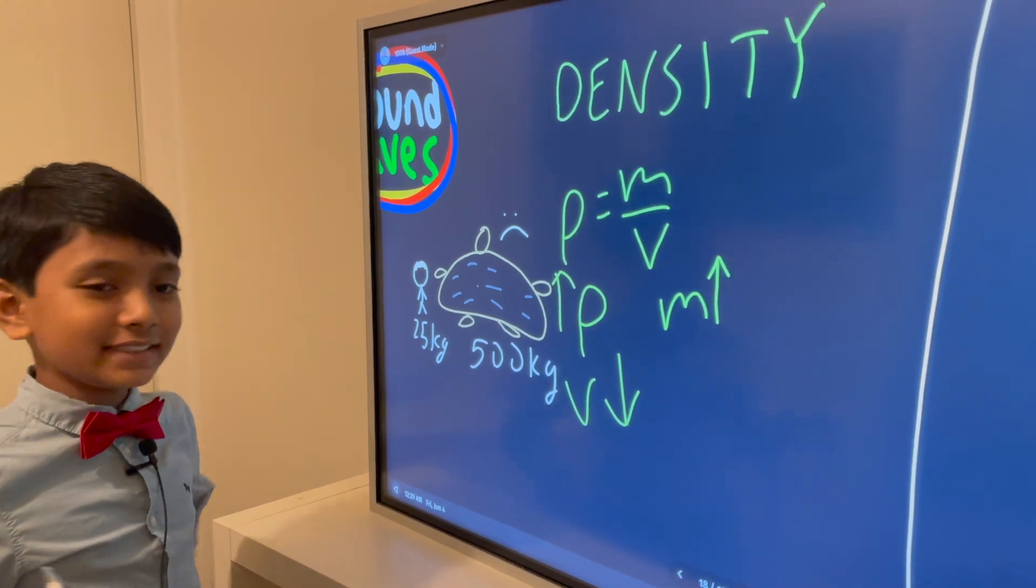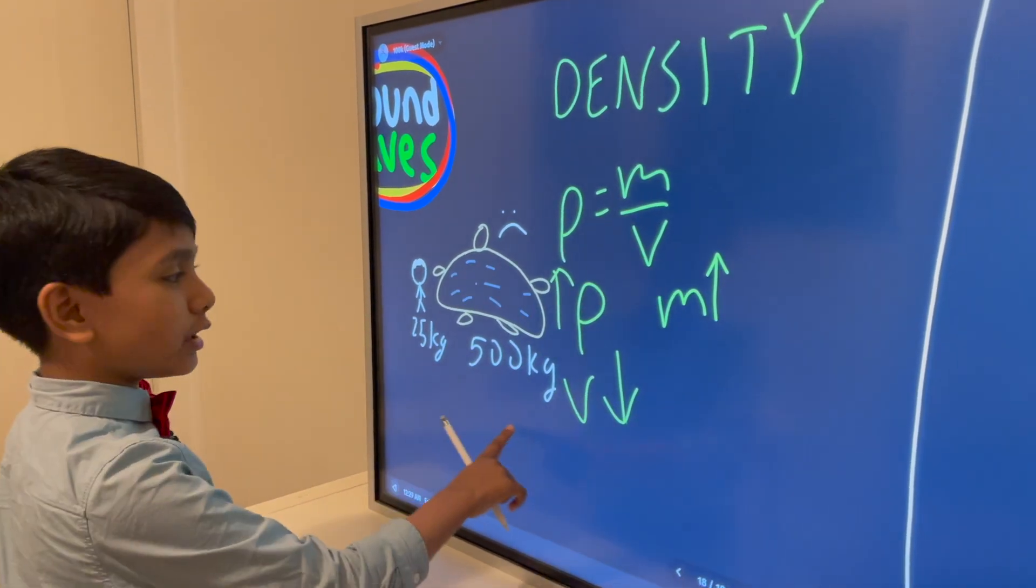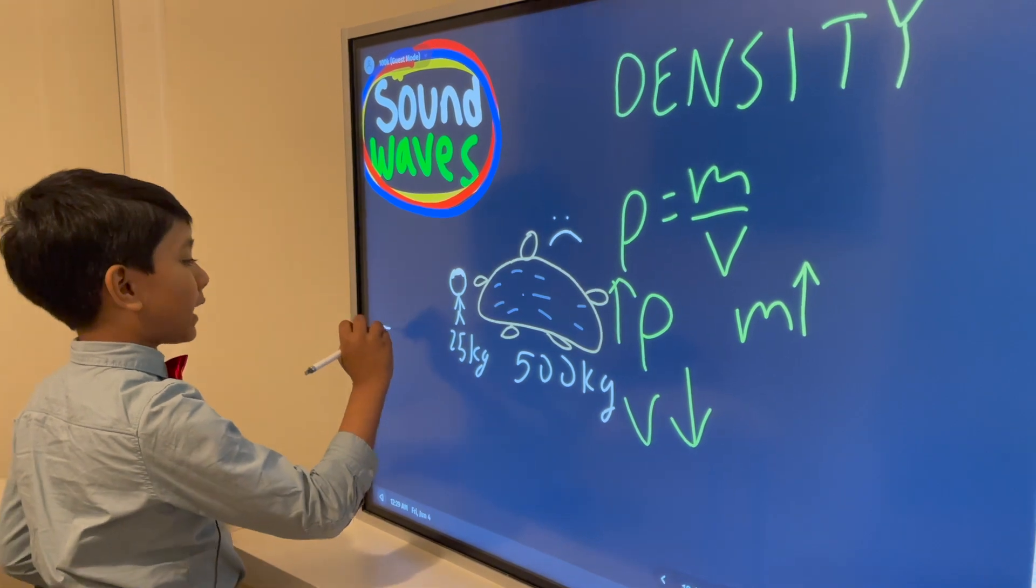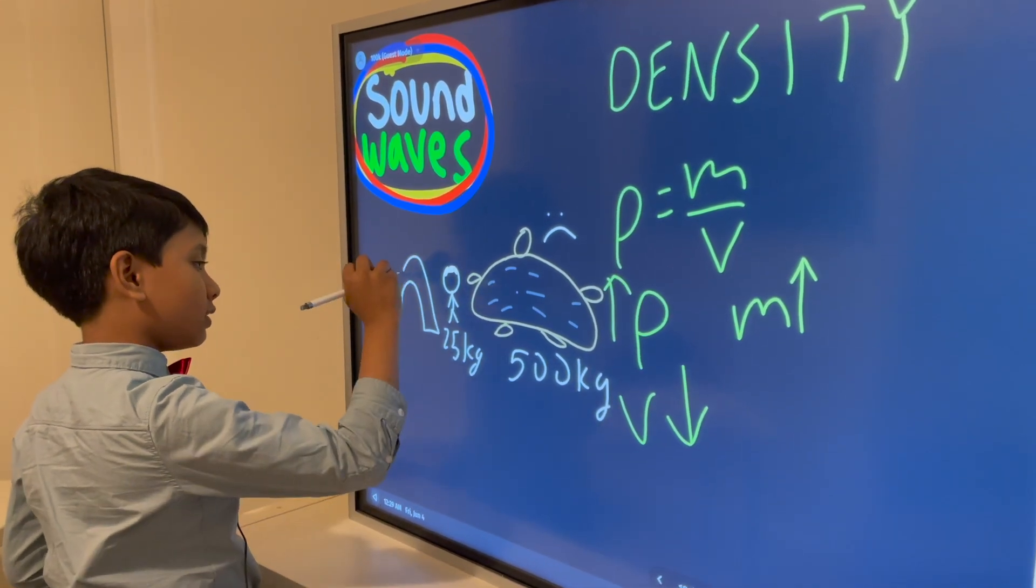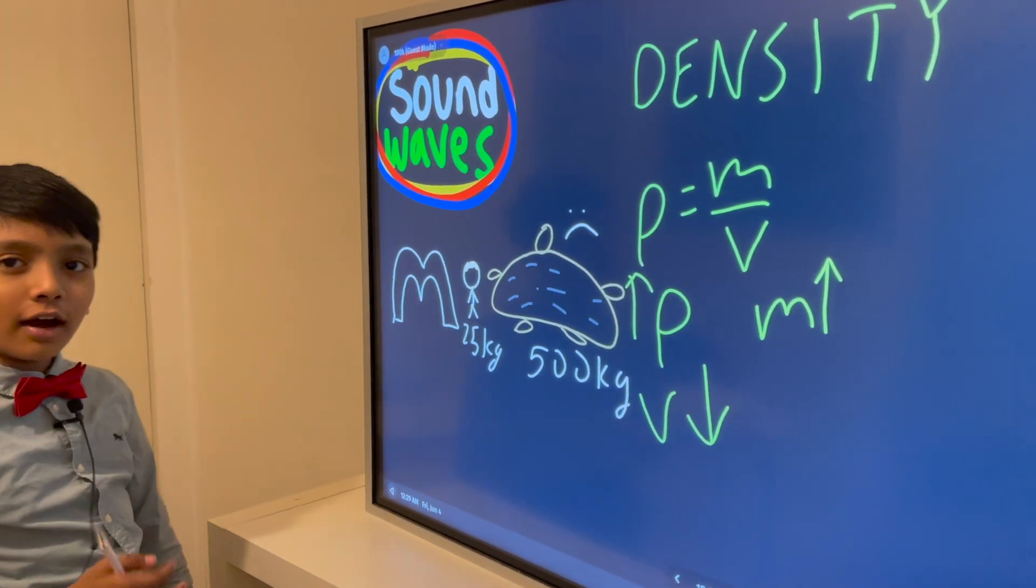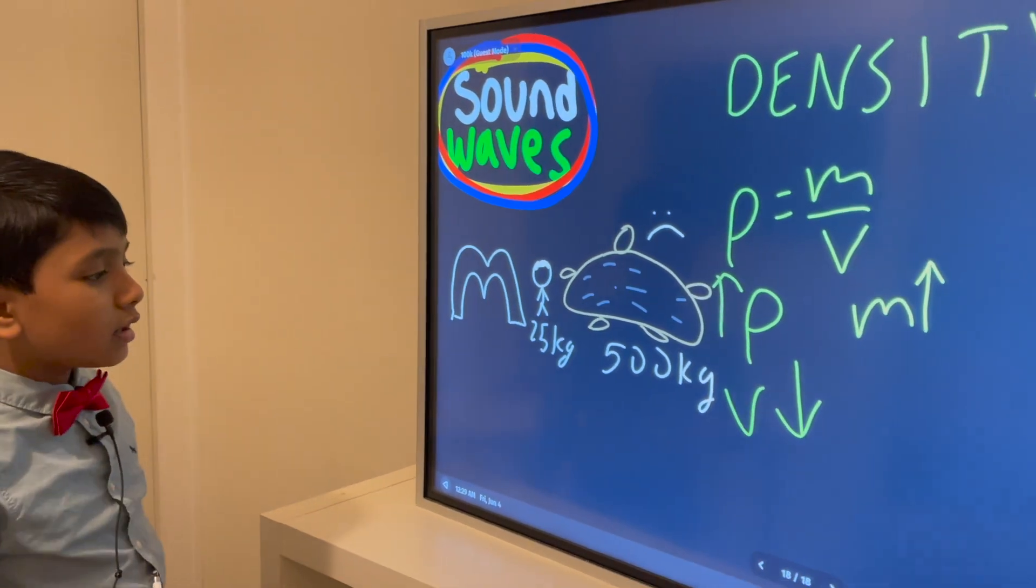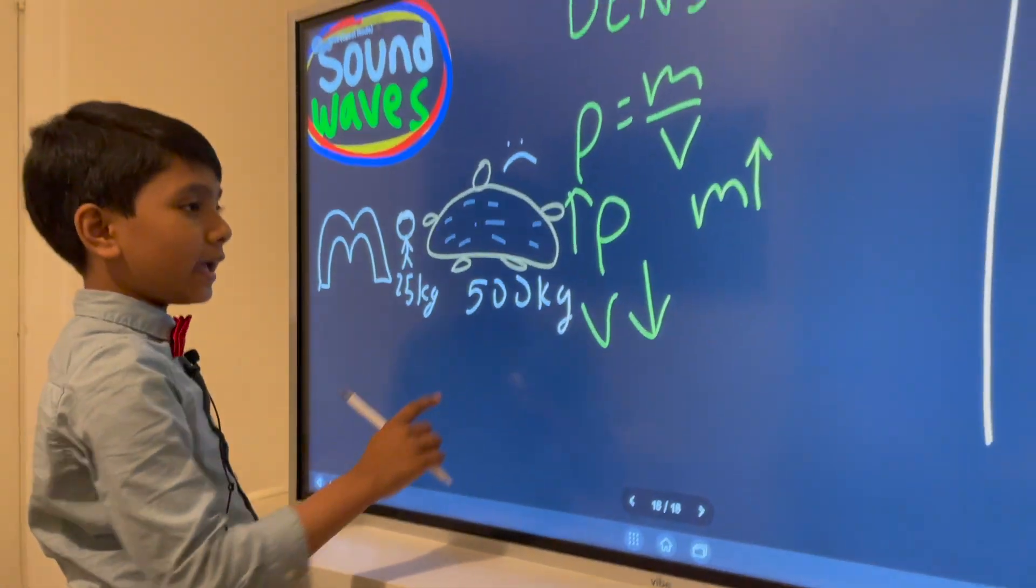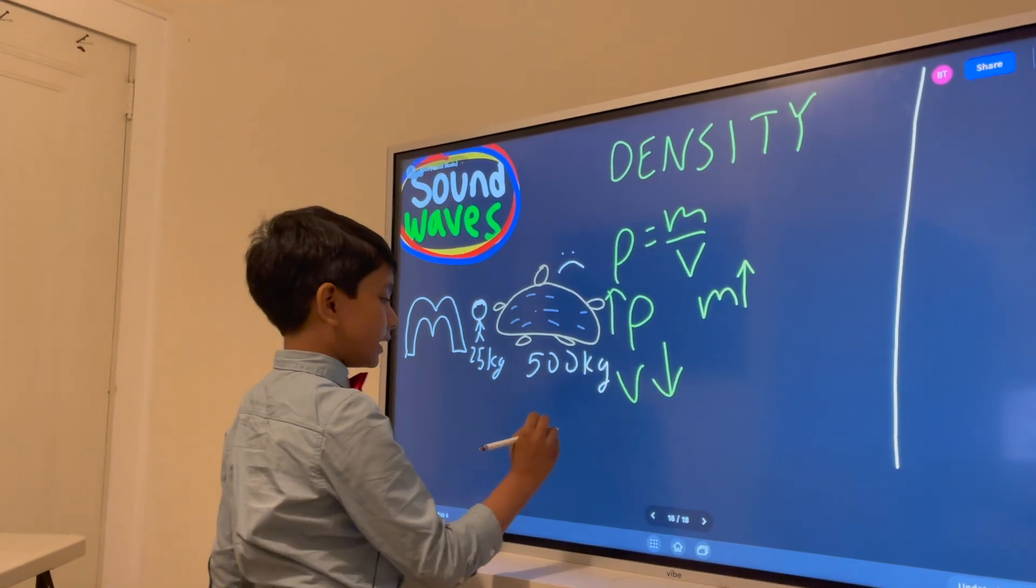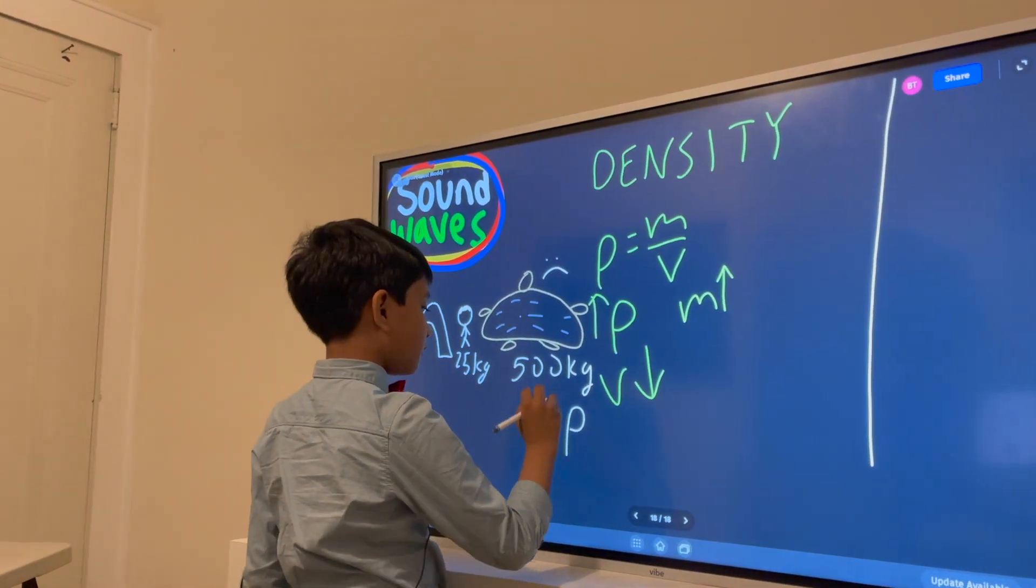So, as you can see, he can barely walk. The only thing that can distract him is a McDonald's Happy Meal. But that's for another time. So, now, the conclusion is as density goes up, velocity goes down.